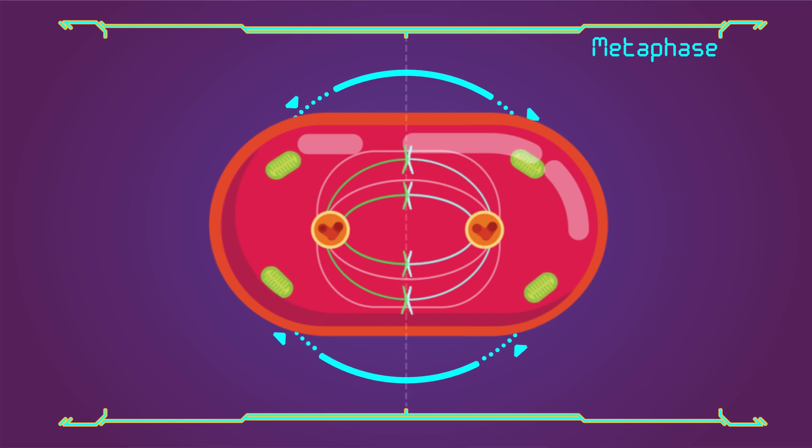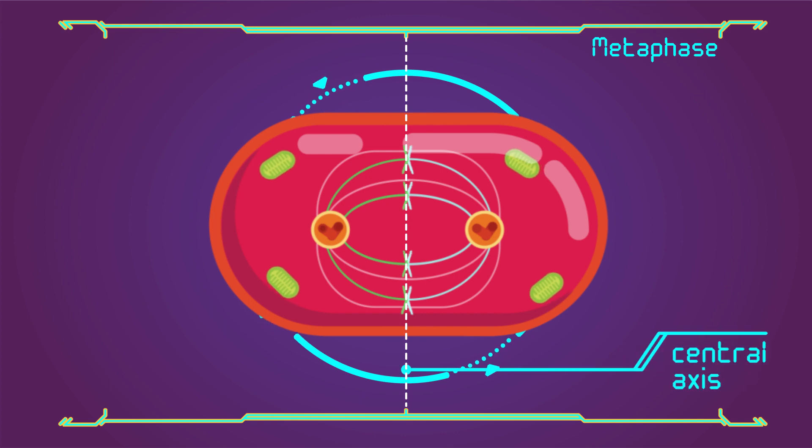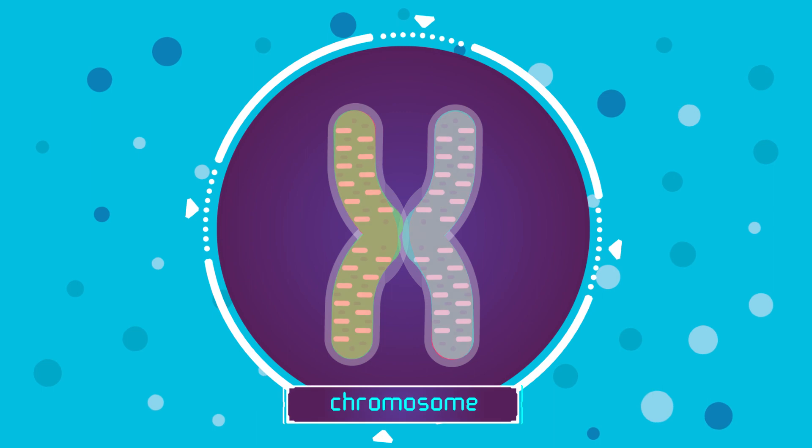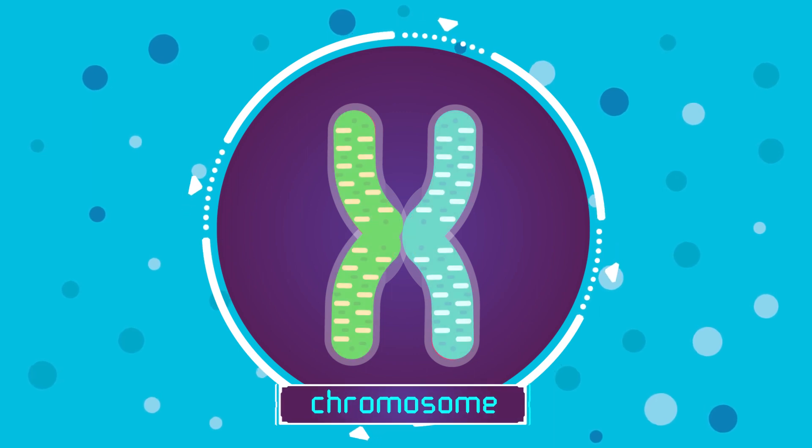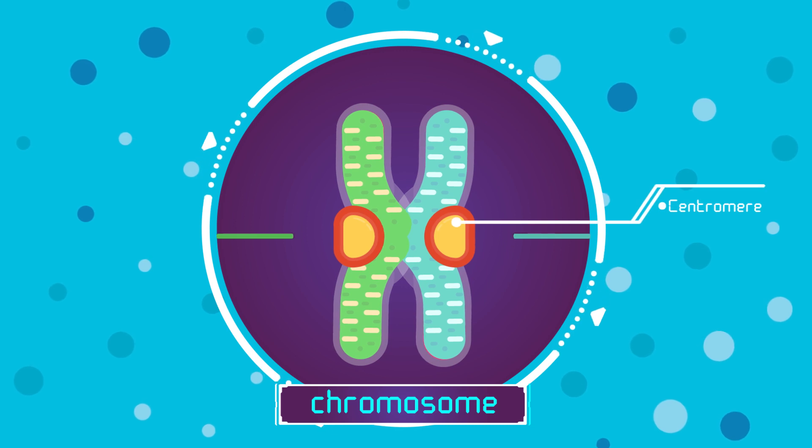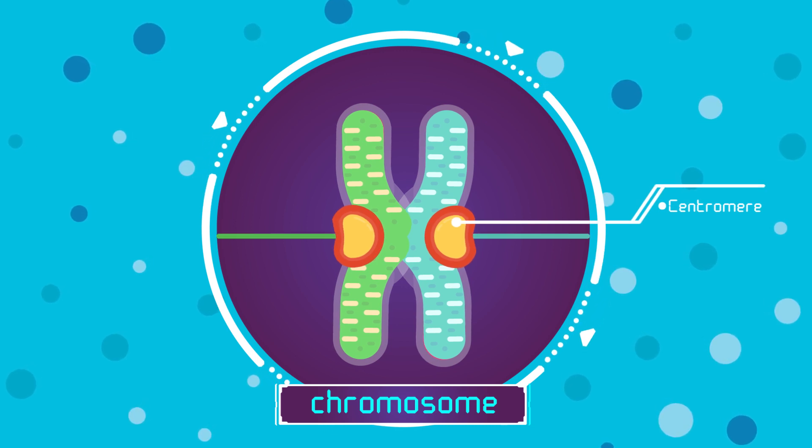Two strands of chromosome are connected at the center at the centromere. The tubules connect to the centromere, not the DNA.